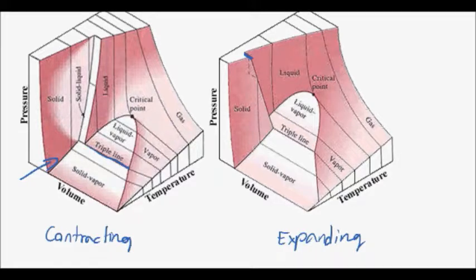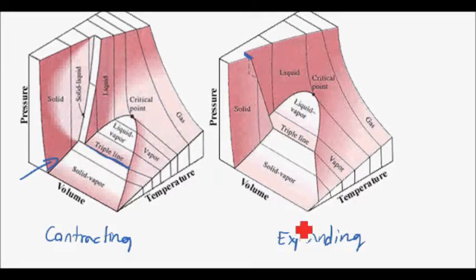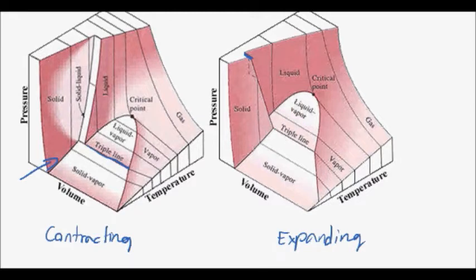I have a couple of diagrams here which illustrate what's actually going on. Here you see the contracting case — as you go from a liquid to a solid, your specific volume decreases towards the left as expected. In the expanding case, you go back out in volume as you become a solid. There is a temperature dependency, and the temperature is what helps identify the internal energy of your system, which tells you what phase you're actually in. There's a temperature, volume, and pressure dependency for all phases.